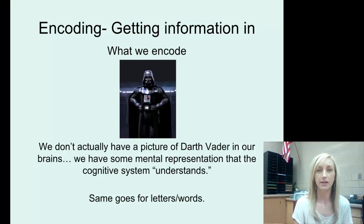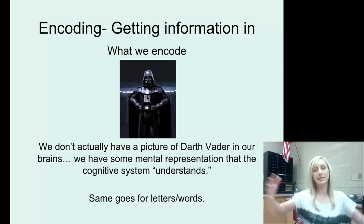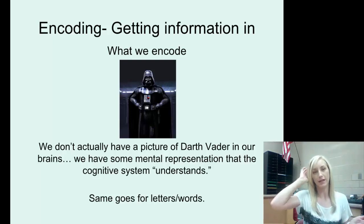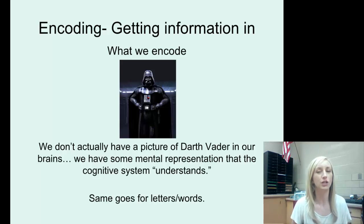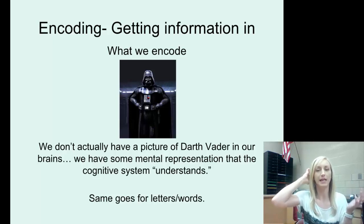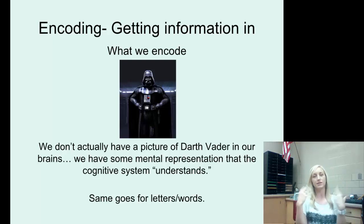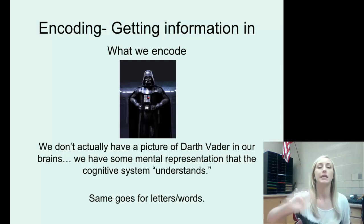Moving right along in our unit 7 notes on memory, this one being about encoding — the first stage of memory. Encoding is getting information in. We're back to this picture of Darth Vader, and what we encode is not an actual picture of Darth Vader in our brains. We have a mental representation that the cognitive system — our neural network — understands. The same goes for letters, words, sounds, and everything we understand in our brain. Making that happen is encoding.